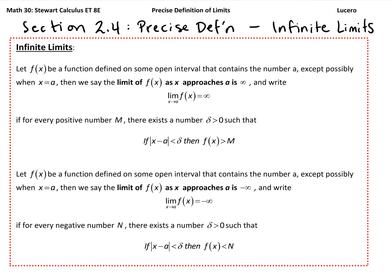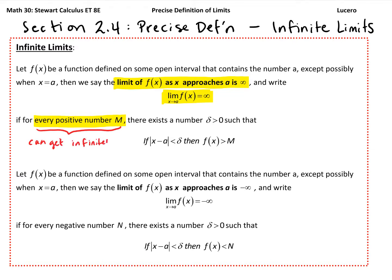Here is the precise definition — you may want to freeze the frame and take notes. Rather than having an epsilon, we're going to work with some positive number M, so that M can get as big as we want. The setup starts the same: we have a function defined on some open interval containing a number a, except possibly at x equals a, because we're focused on what happens as we get arbitrarily close to a. Then we say the limit of a function as x approaches a is infinity if for every positive number M — meaning M can get infinitely big — there exists a delta greater than zero.